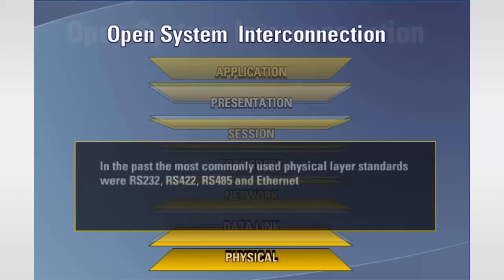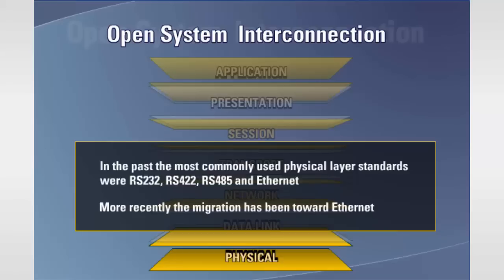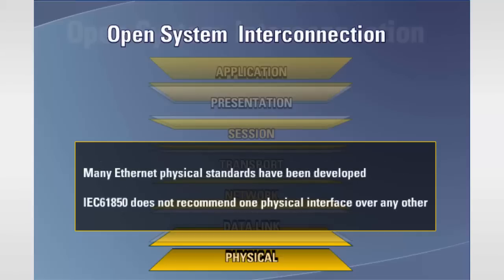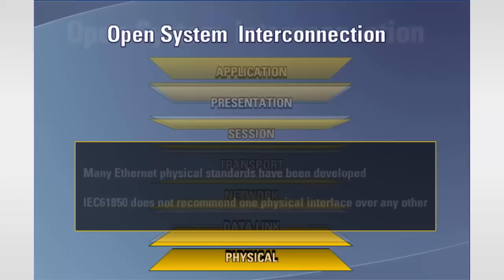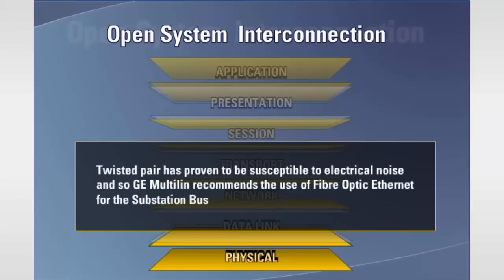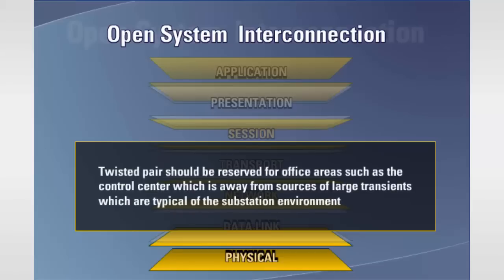In the past, the most commonly used physical layer standards by utility and industrial power system applications were RS-232, RS-422, RS-485, and Ethernet. More recently, the migration has been toward Ethernet. Over the years, many Ethernet physical standards have been developed. IEC 61850 does not recommend one physical interface over any other. However, twisted pair has proven to be susceptible to electrical noise, and so GE Multilin recommends the use of fiber-optic Ethernet for the substation bus. Twisted pair should be reserved for office areas, such as the control center, which is away from sources of large transients, which are typical of the substation environment.